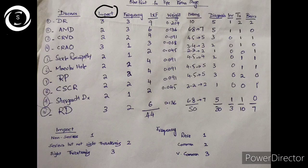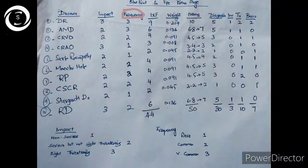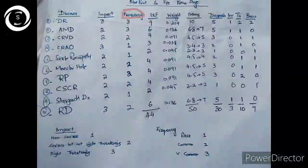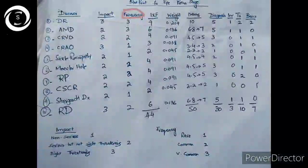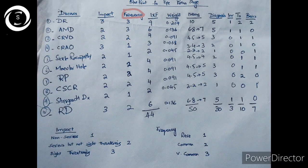The third column is frequency, meaning how common or rare the disease is. If it is rare, it gets a score of one; if it is common, two; and if it is very common, three marks are given. AMD and diabetic retinopathy are very common, so they receive three marks. Central retinal artery occlusion is a blinding condition but rare, so it gets one mark. We include diseases in the blueprint based on importance — both seriousness and frequency.